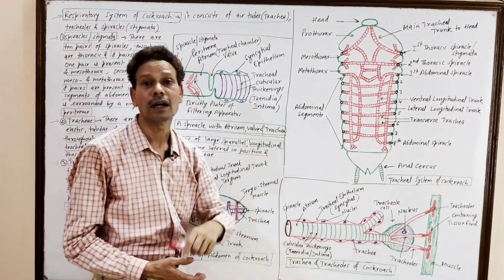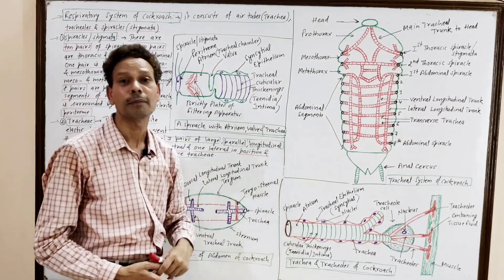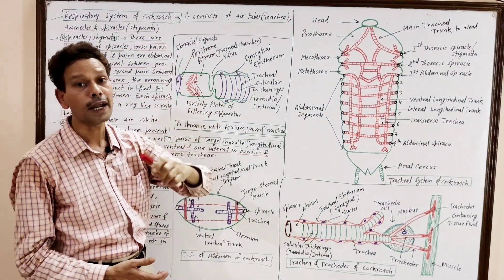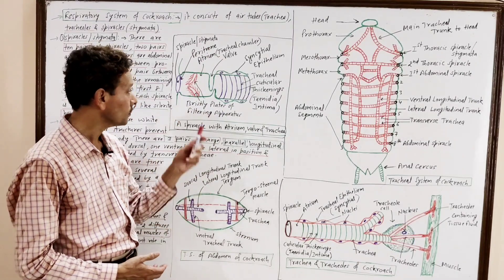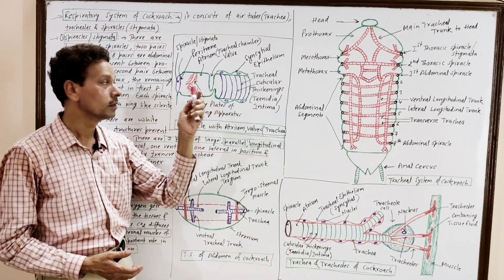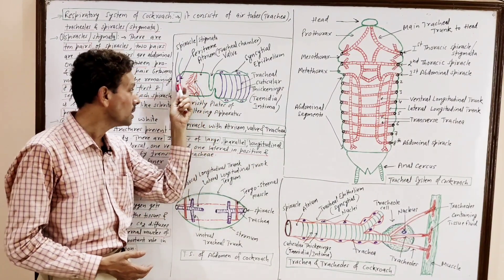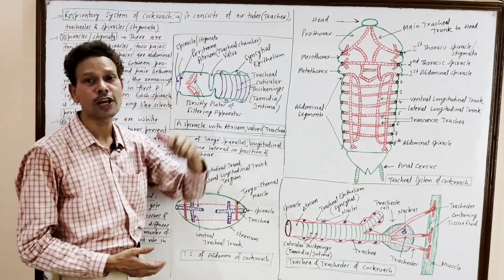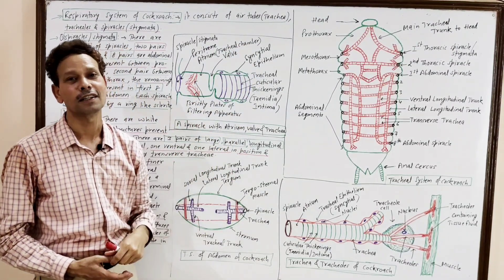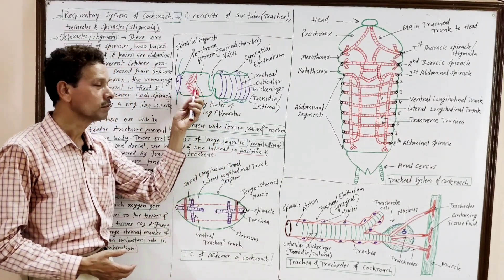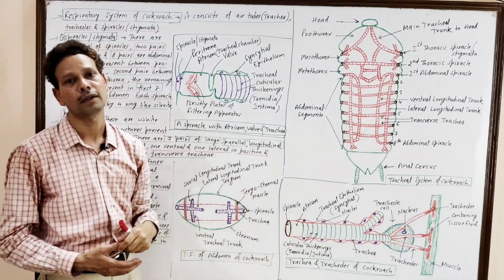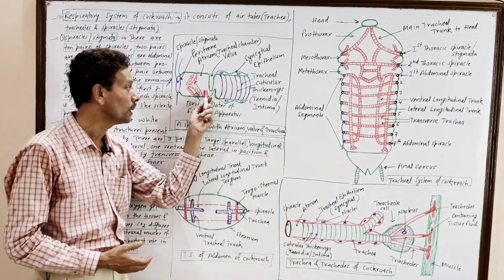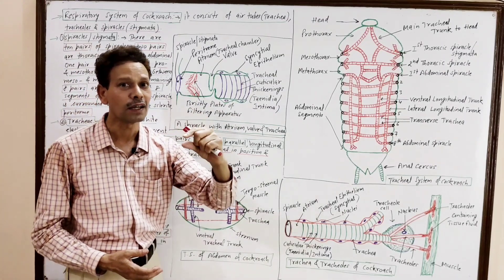These three longitudinal trunks remain interconnected through transverse trachea. The trachea opens by spiracles or stigmata, and this spiracle is lined by a membrane — a spiracular trachea. The first part of the trachea leads into a tracheal chamber called atrium. In this atrium or tracheal chamber, fine bristly plates are present for the filtration of air. The process of inspiration is under the control of a valve that checks the quality of air.